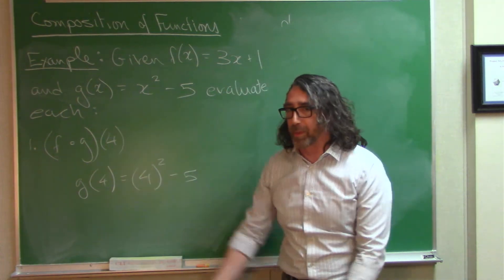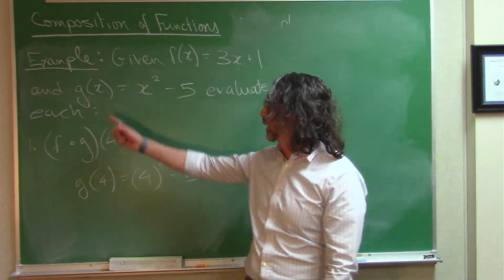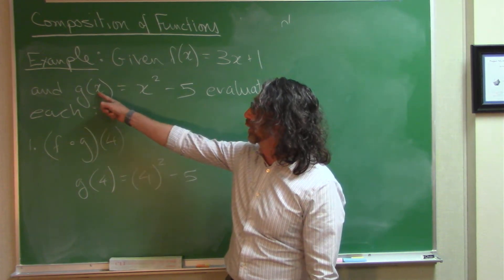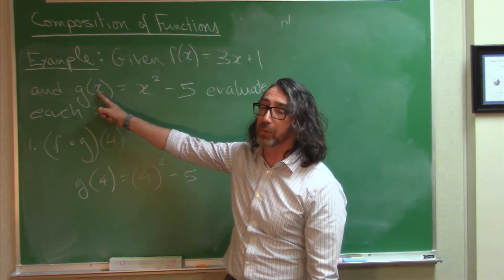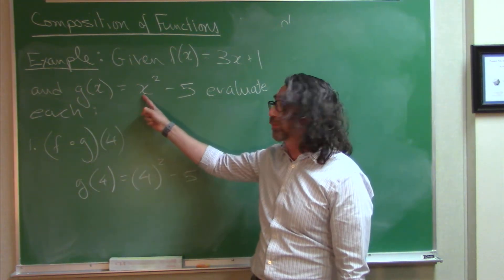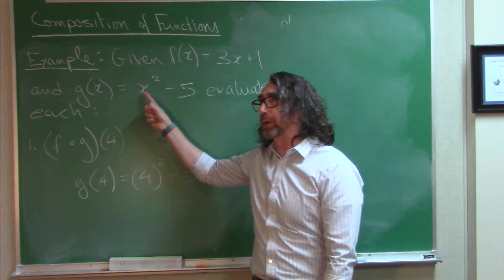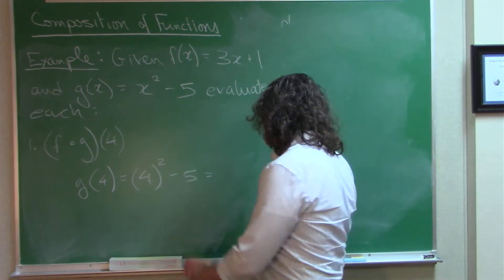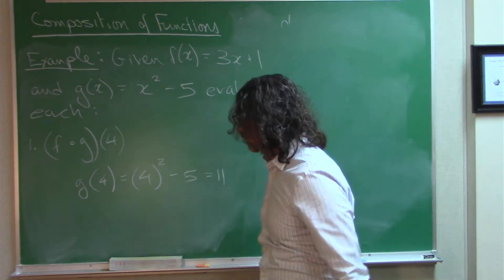Now, of course, we remember how function notation works, right? This is a rule telling you what to do with the input variable to get the output variable. So, this rule says whatever the input is, you take it and you square it, and then you subtract five. So, if I take 4 and square it, I get 16 minus 5 gives me 11.